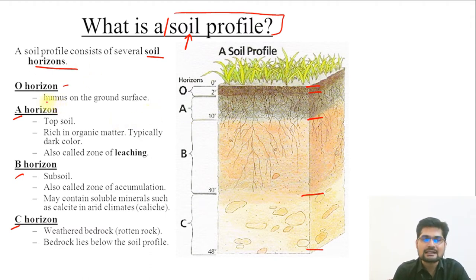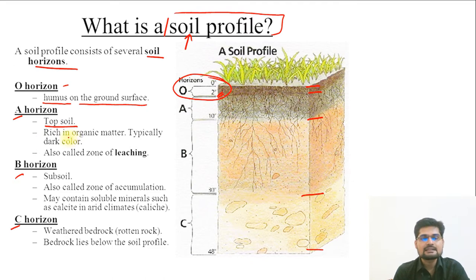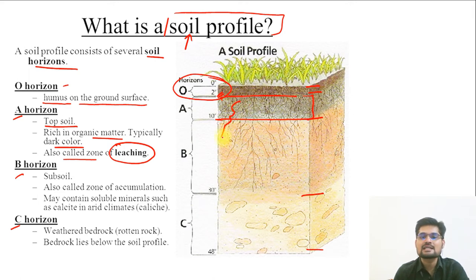O horizon contains humus that is on the ground surface, from 0 to 2 feet largely. Then A horizon is also called topsoil. It is rich in organic matter, typically dark in color, and also called the zone of leaching. This is the top horizon where the nutrients gradually leach down and are removed.